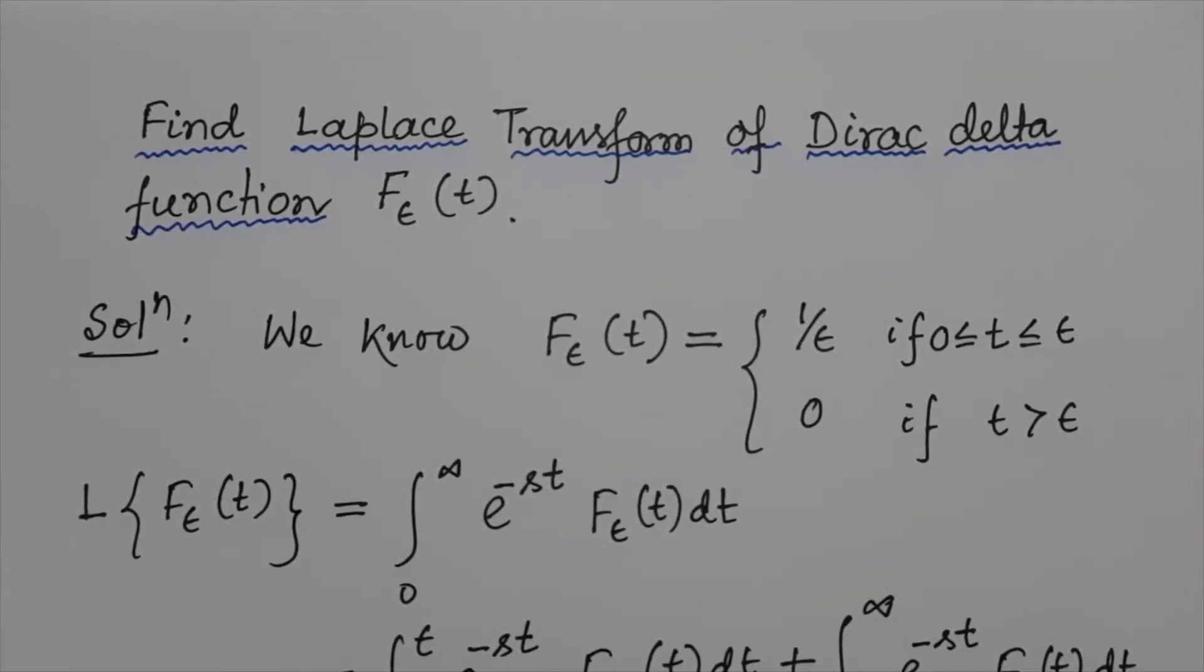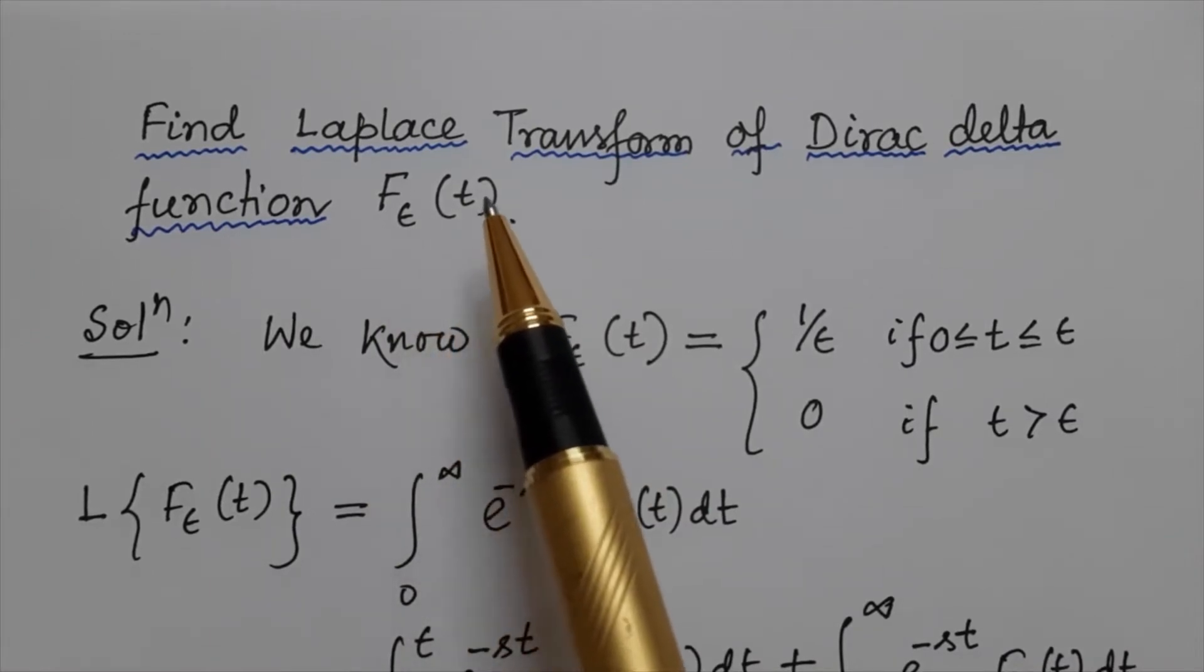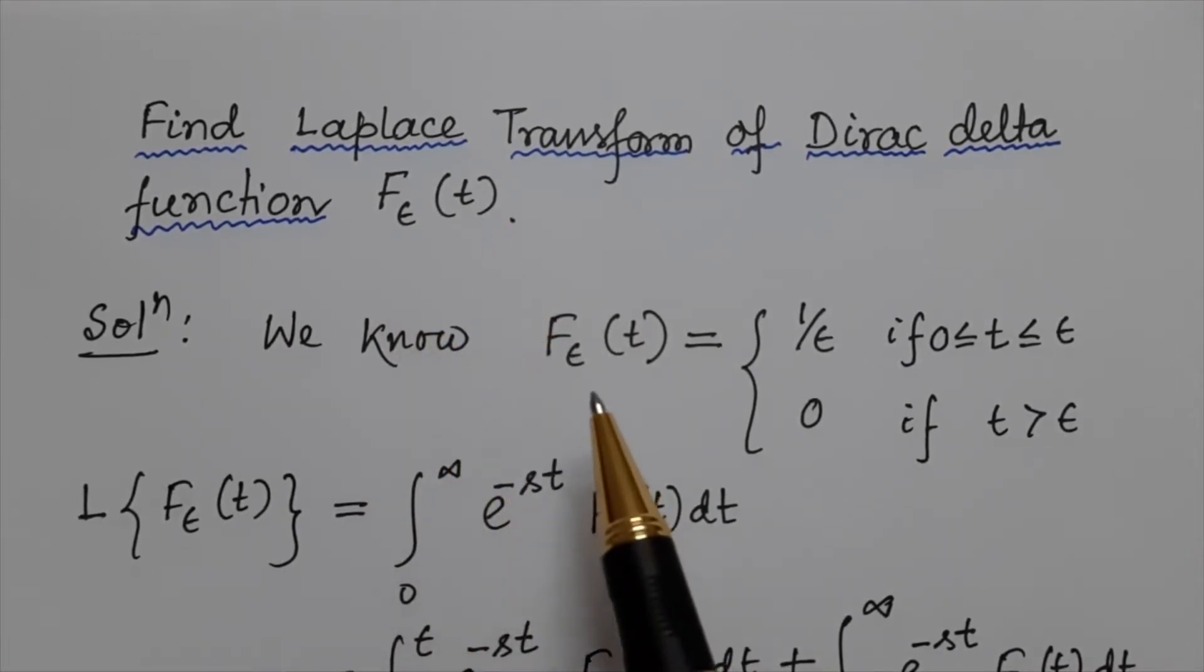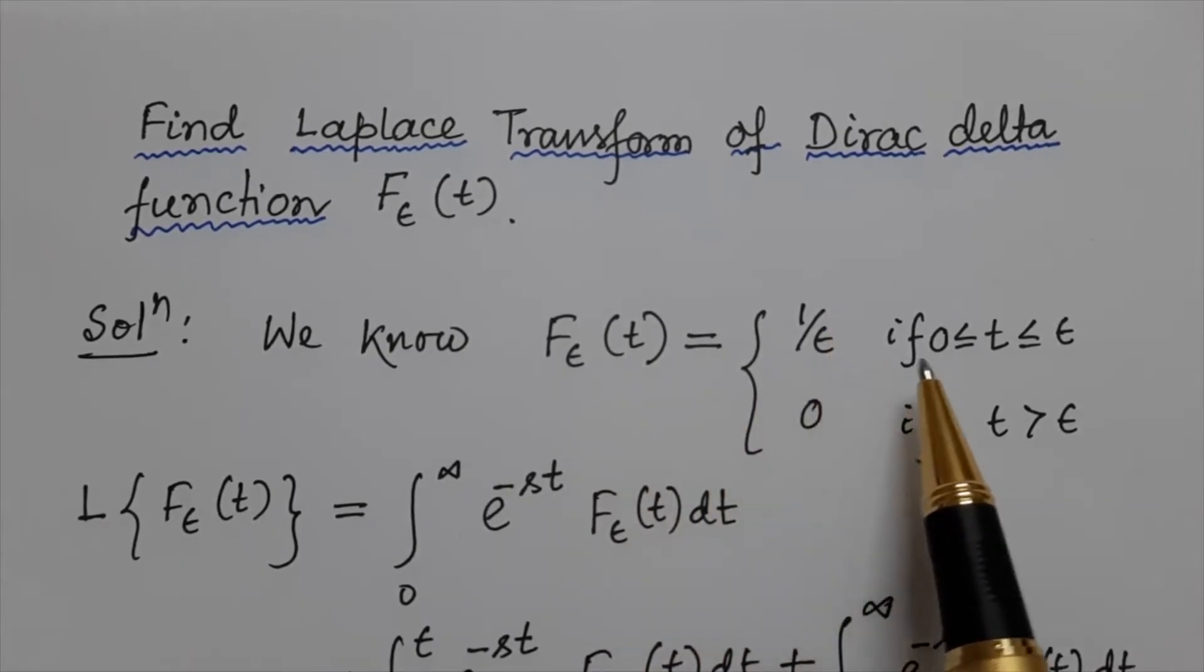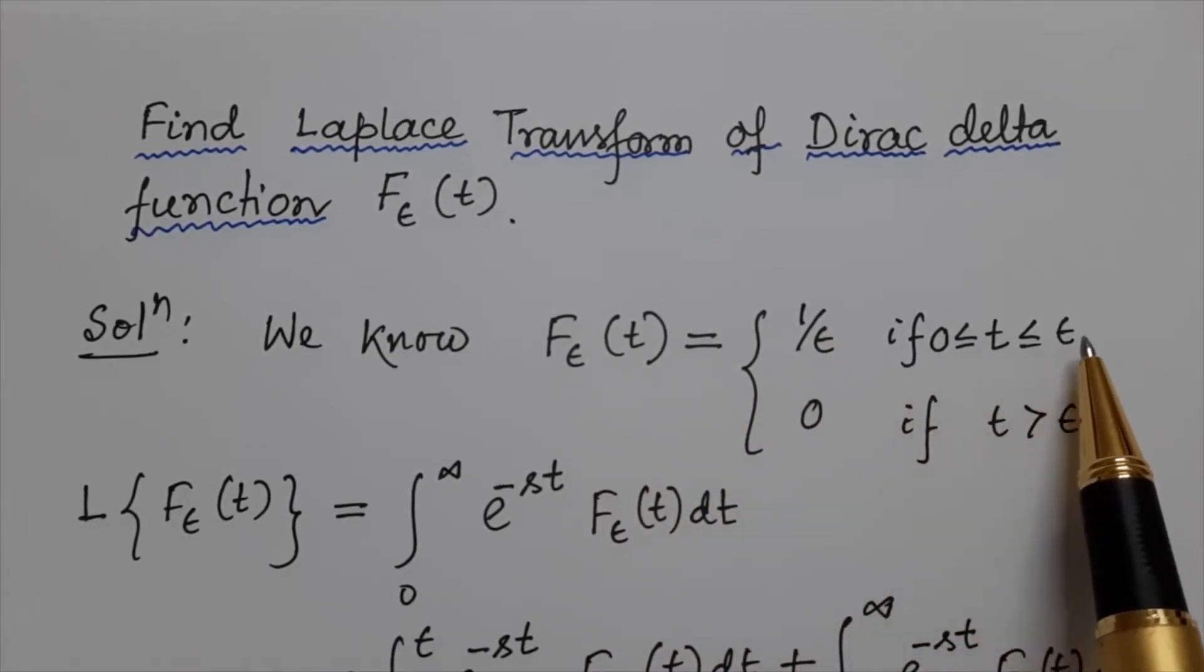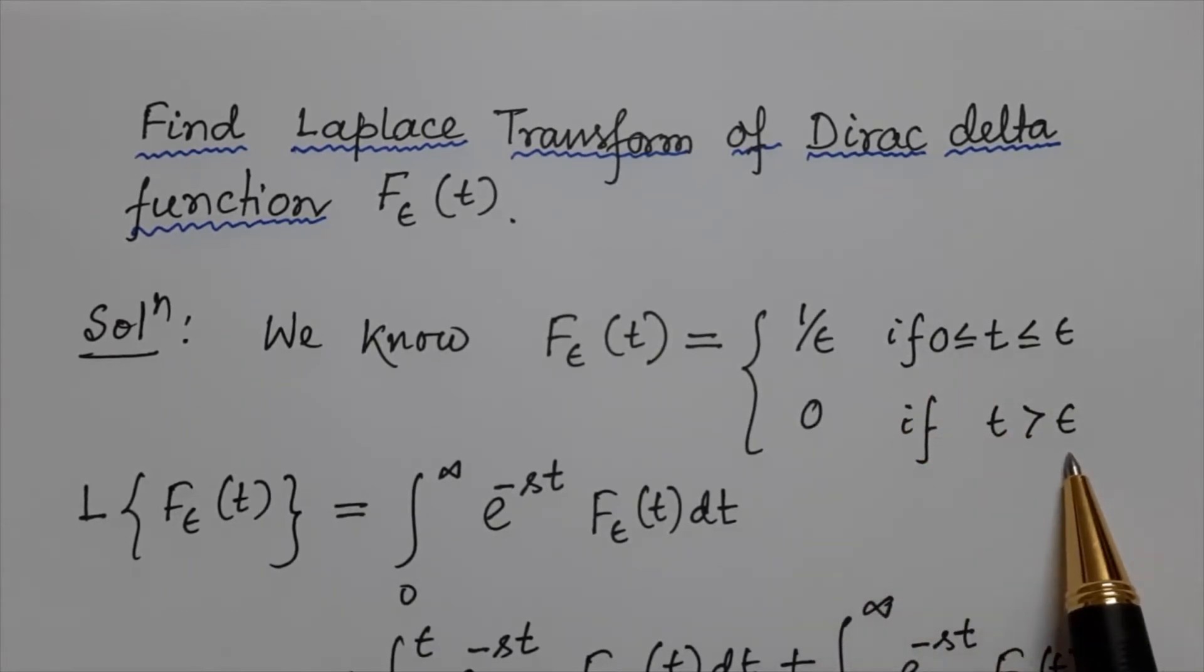Find the Laplace transform of Dirac delta function f_ε(t). We know the Dirac delta function is 1/ε for 0 ≤ t ≤ ε, and 0 for t > ε.